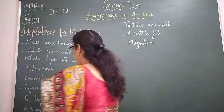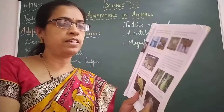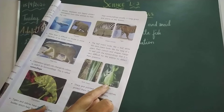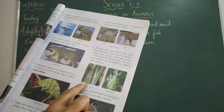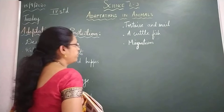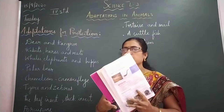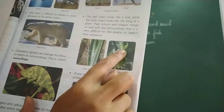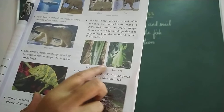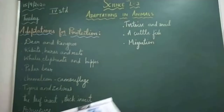Next are the leaf insect and the stick insect. The leaf insect looks like a leaf, while the stick insect looks like the twig of a plant. Their colour and shape merge so well with the surroundings that it is very difficult for the enemy to detect their presence. You can see in the picture — the stick insect looks just like a twig, and the leaf insect looks exactly like a leaf. Like that, they protect themselves from their enemies.